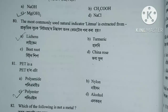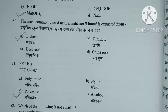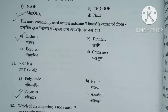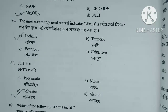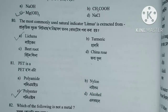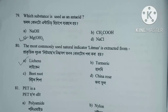Question number 80. The most commonly used natural indicator, litmus, is extracted from — Option A. Lichen. Option B. Turmeric. Option C. Beetroot. Option D. China rose. Option A, Lichen.